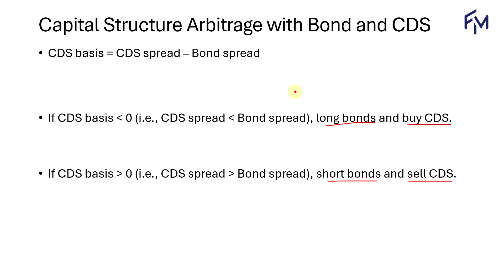To understand why the strategy is done in that way, let's say the CDS spread equals 100 basis points and the bond spread equals 250 basis points. We will expect this mispricing to converge towards zero — the CDS spread to increase and the bond spread to decline. If the bond spread declines, the yield to maturity will also decline and the bond price will increase. So the bonds are undervalued and the strategy involves buying the bonds, taking a long position.